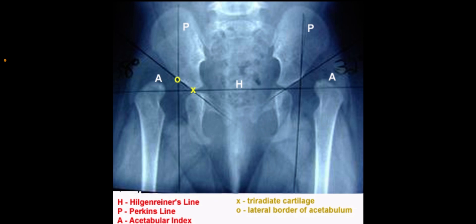Perkins line is a line perpendicular to Hilgenreiner's line through a point at the lateral margin of the acetabulum. Femoral head ossification should be medial to this line.